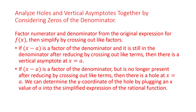If x minus a is a factor of the denominator but it's no longer present after you reduce by crossing out like terms, then there's a hole at x equals a. We can determine the y-coordinate of the hole by plugging an x value of a into the simplified expression of the rational function — what we have left after we cross out.